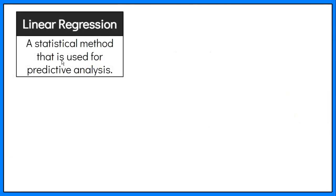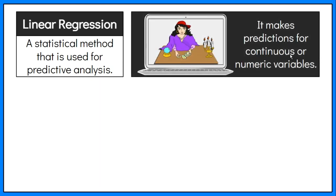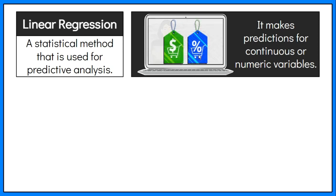Linear regression is a statistical method that is used for predictive analysis. It makes predictions for continuous or numeric variables, such as daily sales, monthly salary, and product price.